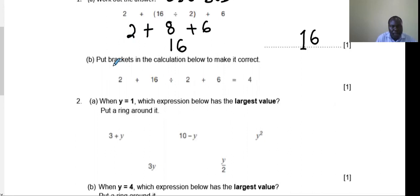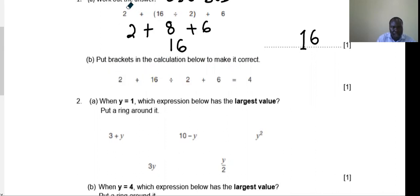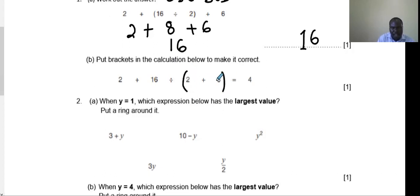The next question: put brackets in the calculation below to make it correct. We use trial and error. For example, try putting brackets around 2 plus 16: that gives 18 divided by 2 = 9, and 9 plus 6 cannot equal 4. Try again with 16 divided by 2 = 8, then 8 plus 2 = 10 — also not 4. Try brackets around 2 plus 6: that gives 8, then 16 divided by 8 = 2, and 2 plus 2 equals 4. So the brackets go there.